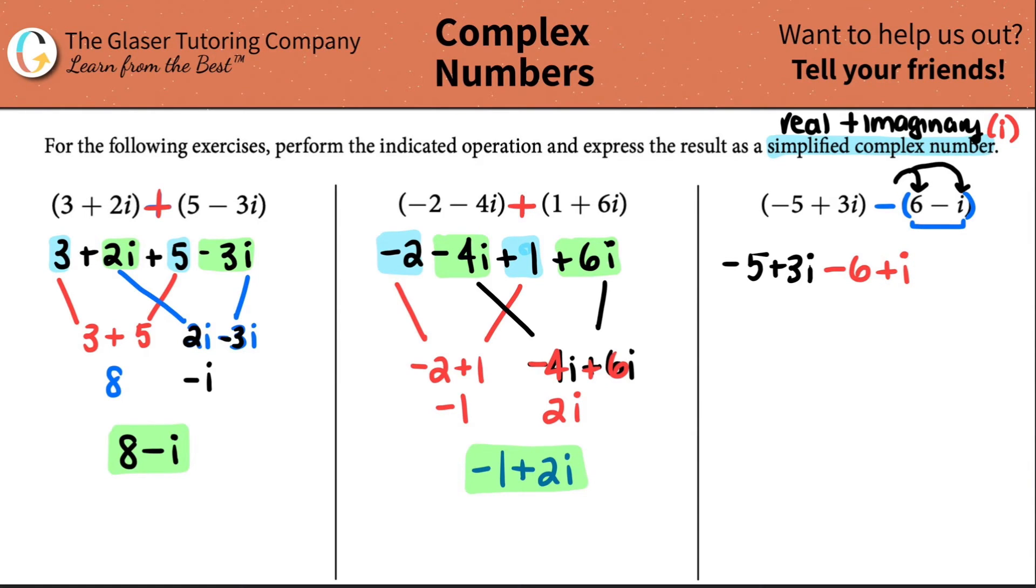Once we now distribute and do that math, we can take it out of the parentheses and now we're ready to group together like terms. I see that I have a negative 5 just as a number and then a negative 6 because it's a minus 6. So I have a negative 5 minus 6. Negative 5 minus 6 is a negative 11.